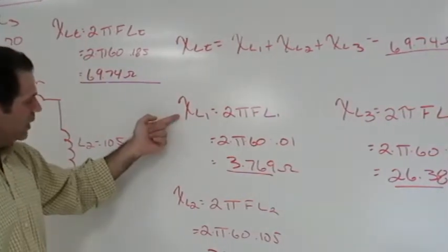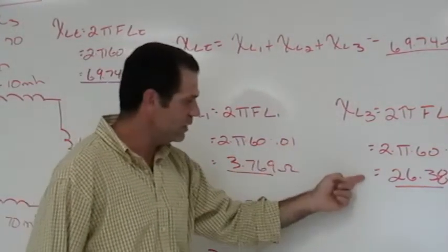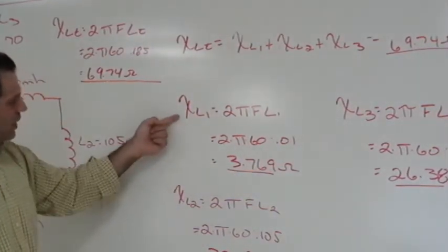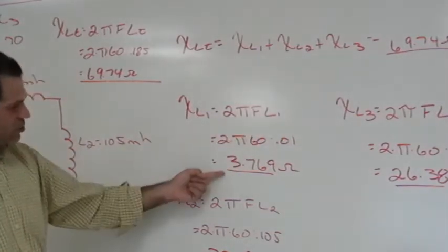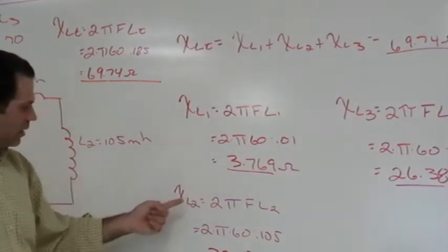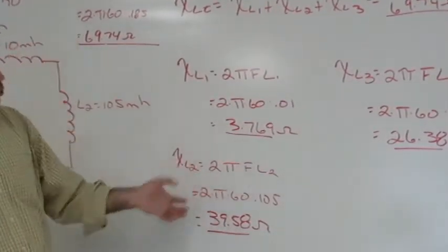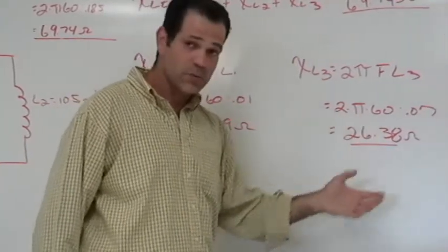In this case what we did, we found the inductive reactance of each individual component and saved it into our calculators. So X of L1 using the 2 pi FL formula gave us 3.769 ohms. X of L2 gave us 39.58 ohms. X of L3 gave us 26.38 ohms.